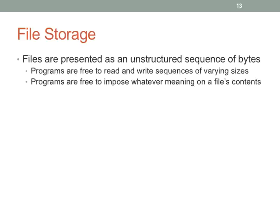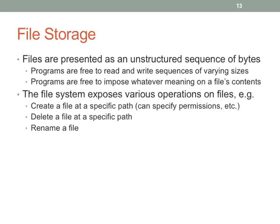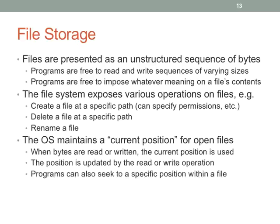Files are unstructured sequences of bytes. The file system will expose various operations: create a file at a path, delete a file at a specific path — or unlink it on Linux — and rename a file. Renaming can move a file to a different directory structure. But if you want to move it to a directory on a different physical storage device, the OS may say you can't do that — you have to create a copy and then delete the original.